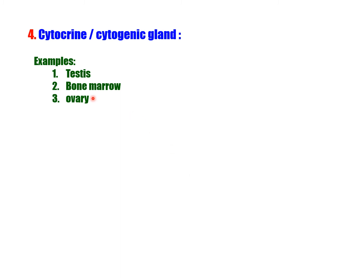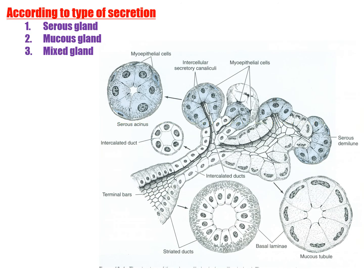Examples of cytocrine glands: testis, bone marrow, and ovary. Classification according to the nature (type) of secretion: serous gland, mucous gland, or mixed gland. Serous gland: secretion is protein in nature; cells secrete enzyme-rich watery fluid. Cells of serous acini are triangular with a round, centrally placed nucleus. Example: pancreas.